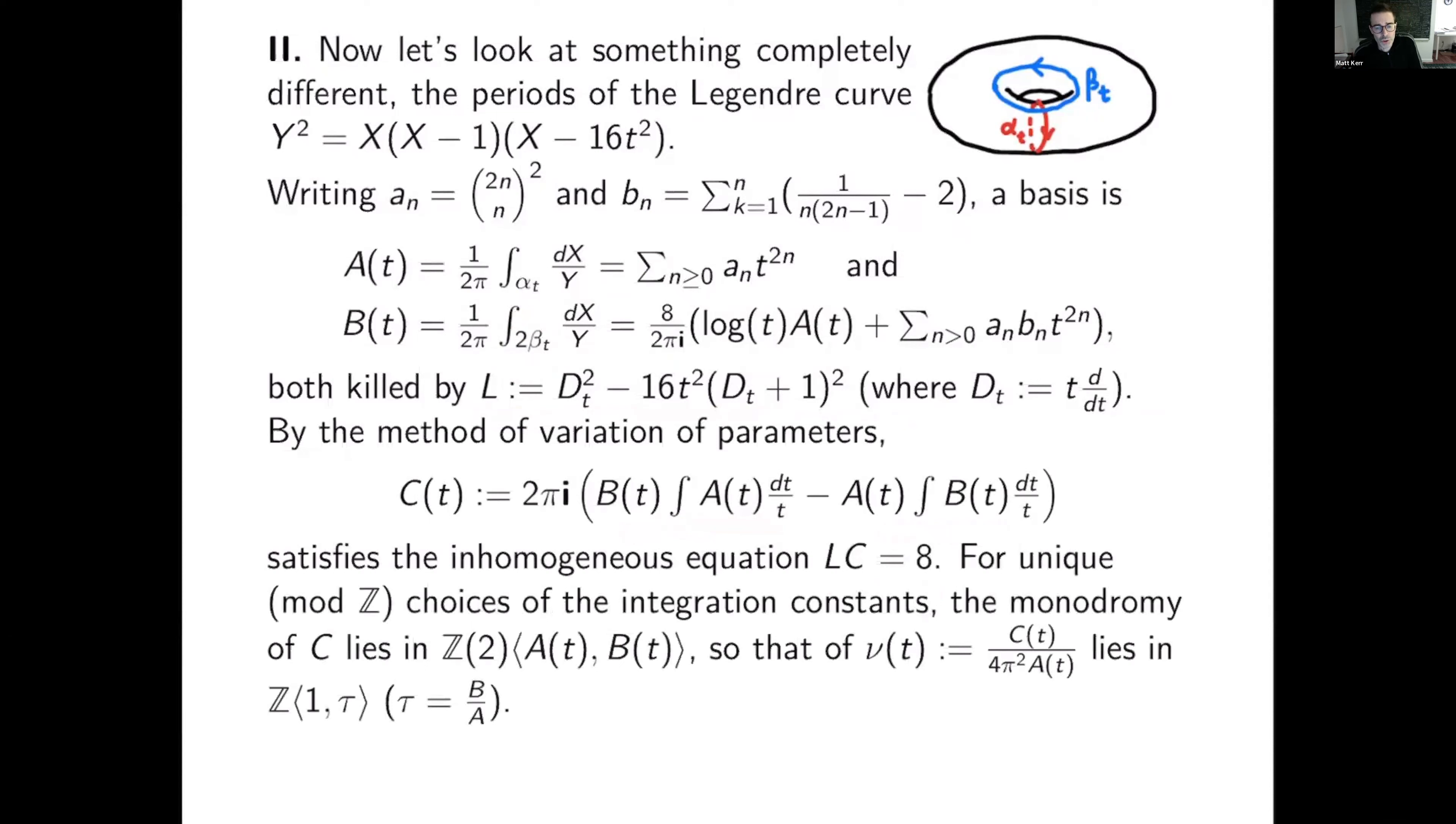Now I want to tune the choices of the integrals, namely the constants of those integrals, so that the monodromy of c is sort of integral. In other words, lies in two pi i squared Z, times the lattice generated by a and b. And then I can divide c by a, and the monodromy will then be, with the four pi squared, in Z of one tau, the period lattice of the elliptic curve.